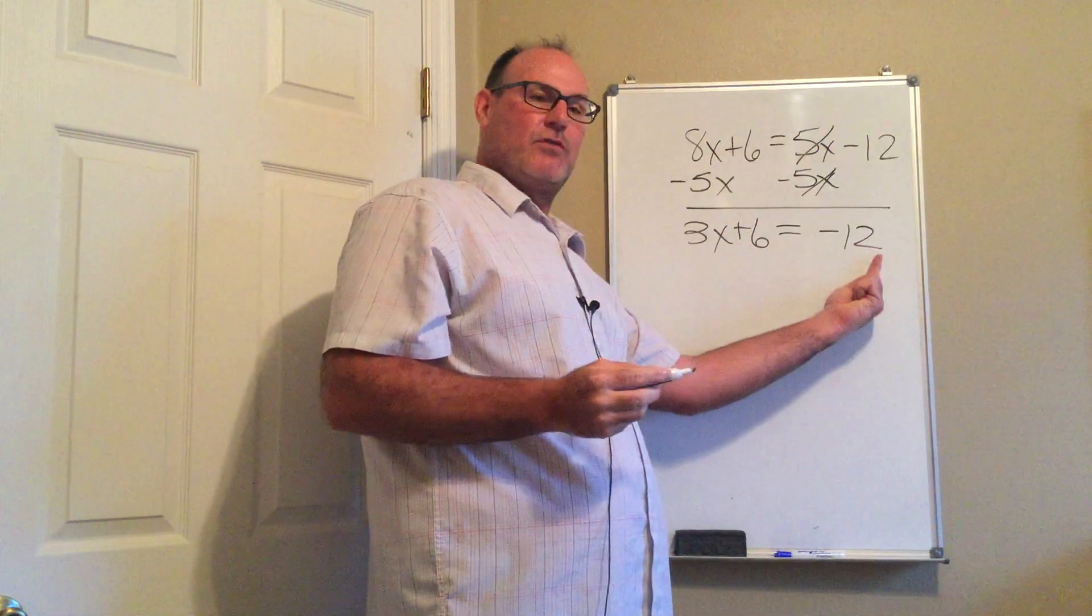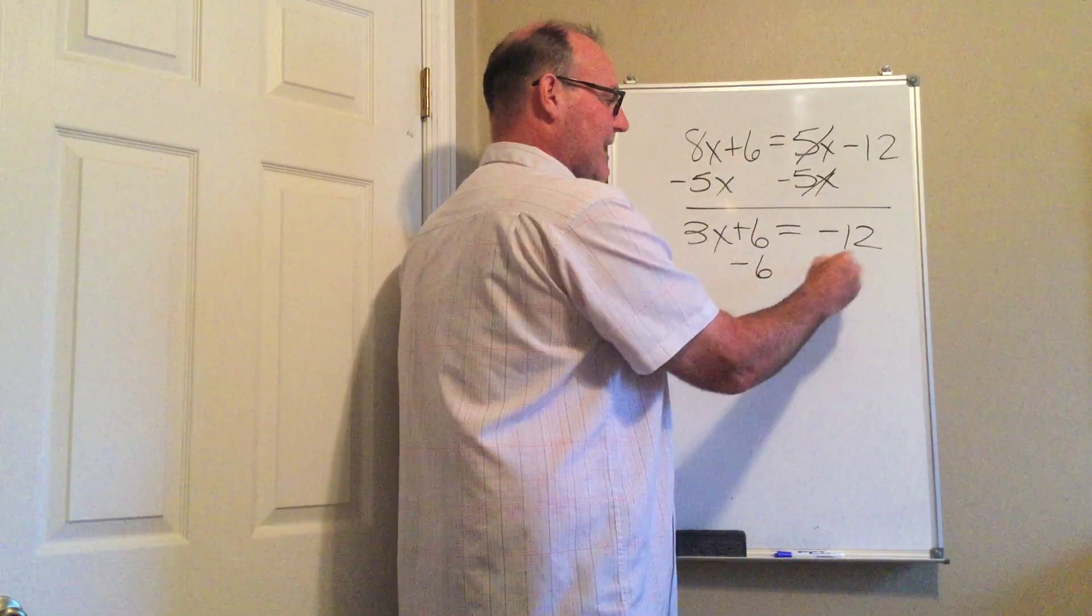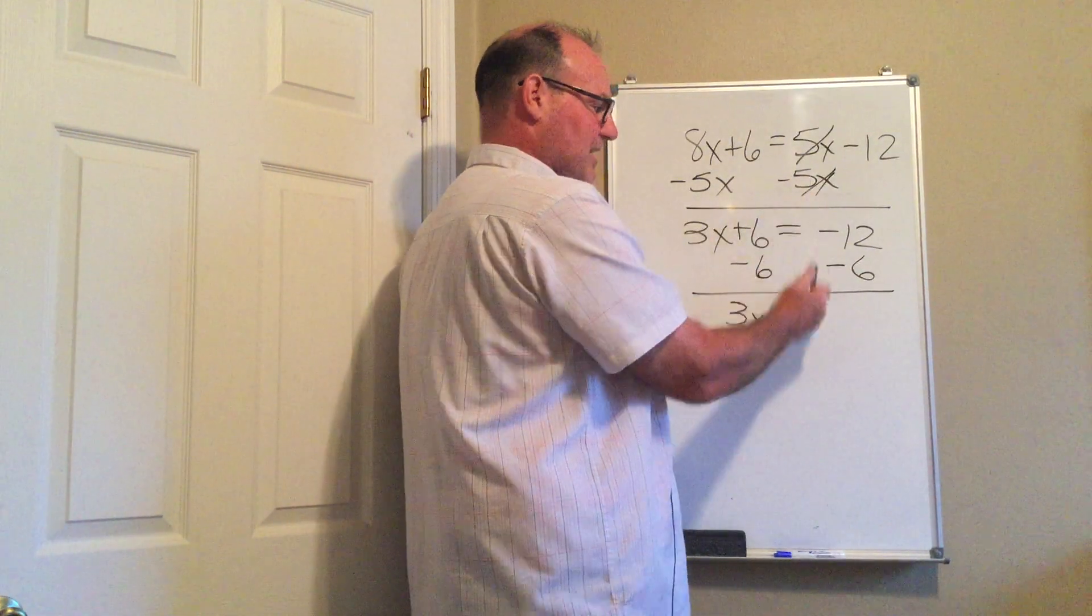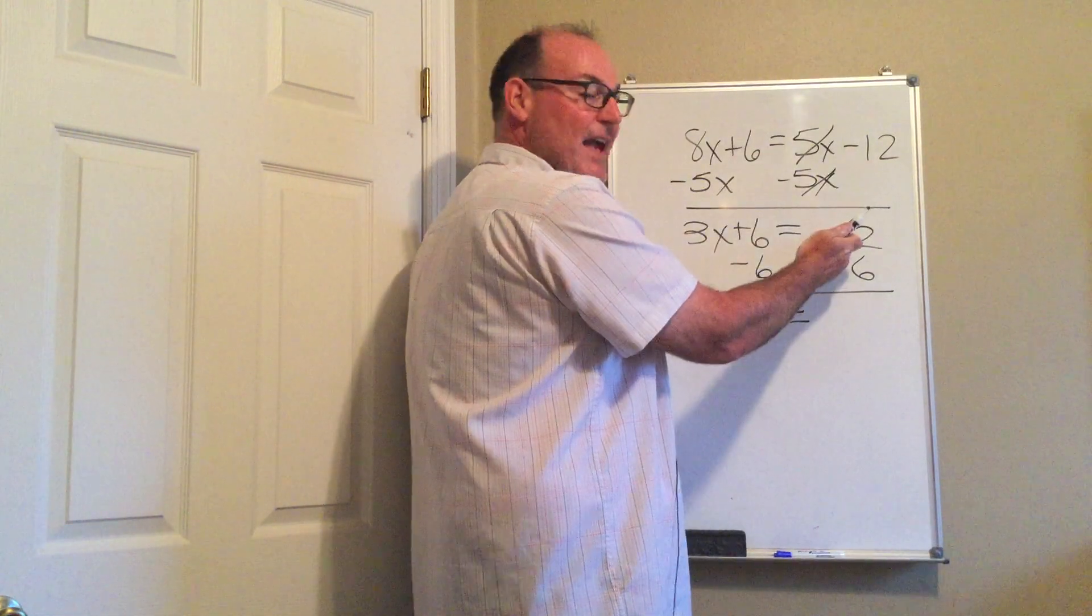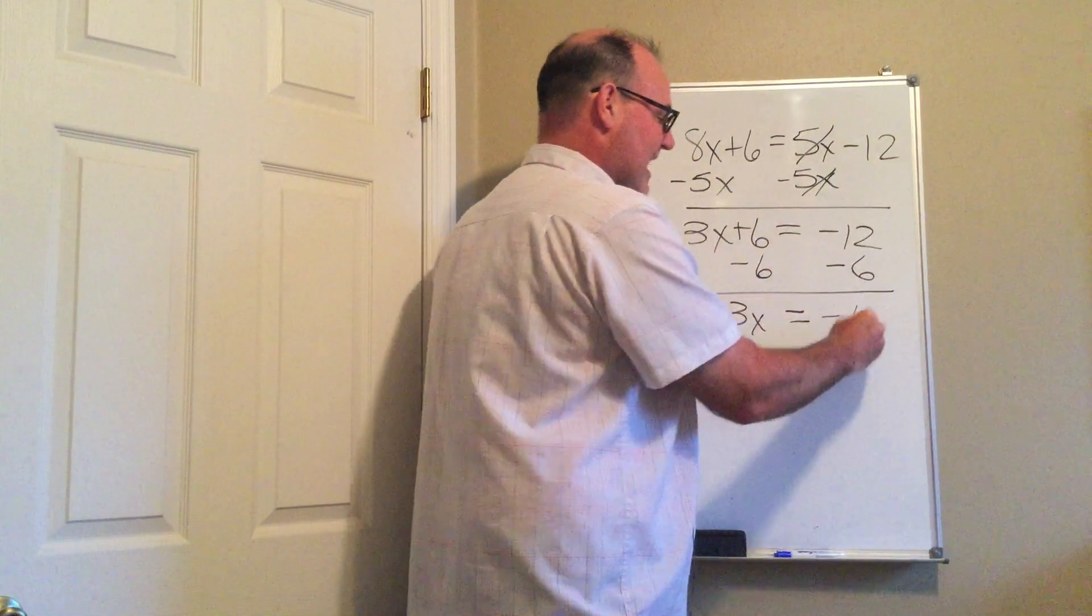Now I'm going to bring the 6 over to this side by subtracting it as well. And so I have 3X, the equal sign stays in the middle, a negative 12, a negative 6 is negative 18.